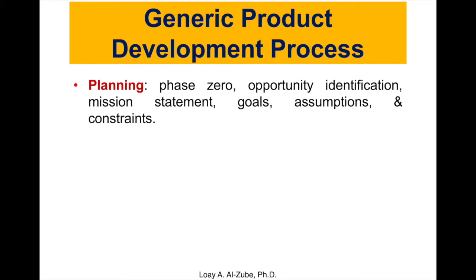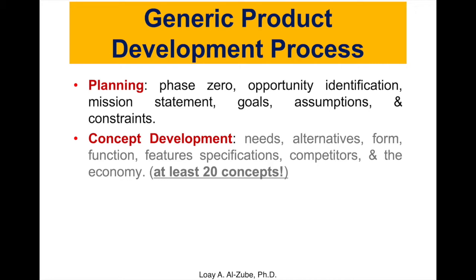It's really exciting how you get information from users to create your mission statements, identify goals, and then create a list of assumptions and constraints. The following phase is going to be the concept development, and this is actually the crown jewel of the product design development process. In this phase, we will be able to look at the needs based on the surveys and the feedback we collected from the users, and we will categorize these needs.